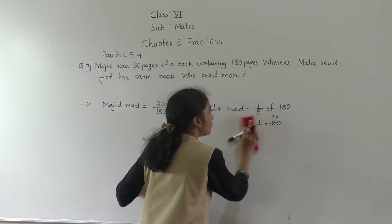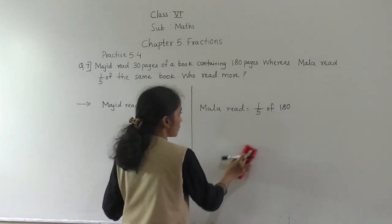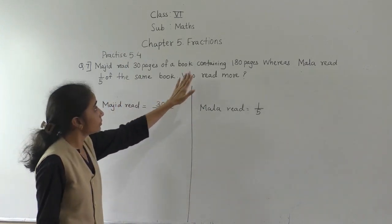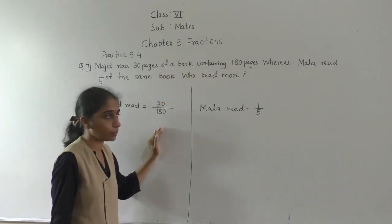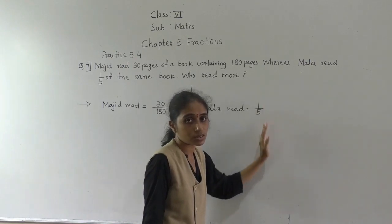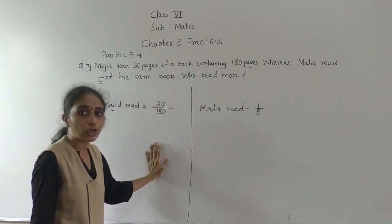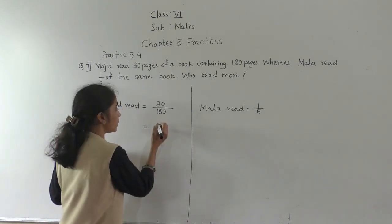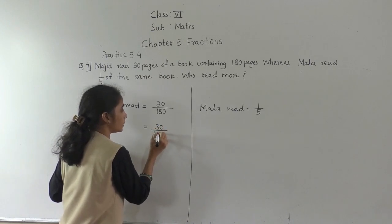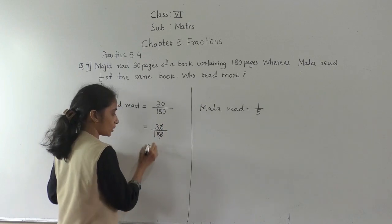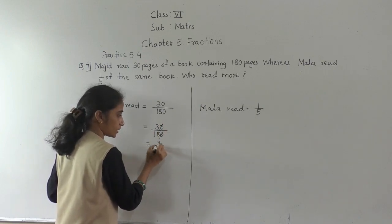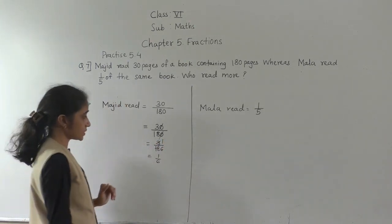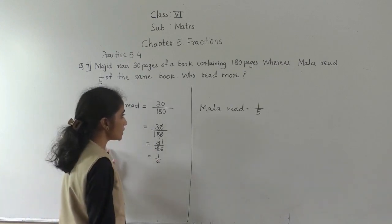We can also solve this another way. Majid read 30 pages of a book containing 180 pages, so we can write that as 30 upon 180. Doing the lowest term: cancel the zeros, then 3 and 18 divide by 3 gives 1 sixth. So Majid read 1 sixth of the book.